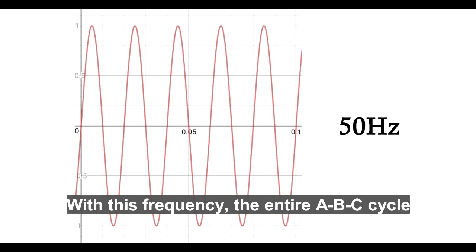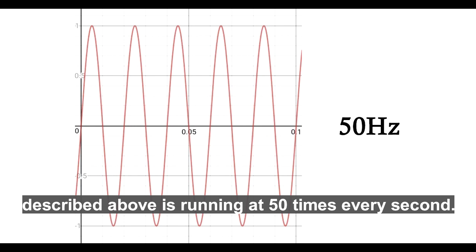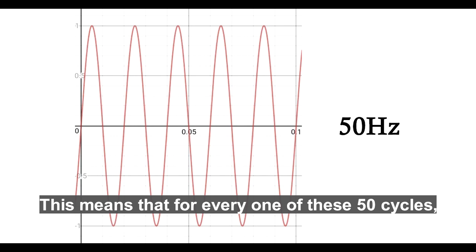With this frequency, the entire ABC cycle described above is running 50 times every second. This means that for every one of these 50 cycles, the signal is positive for one hundredth of a second.